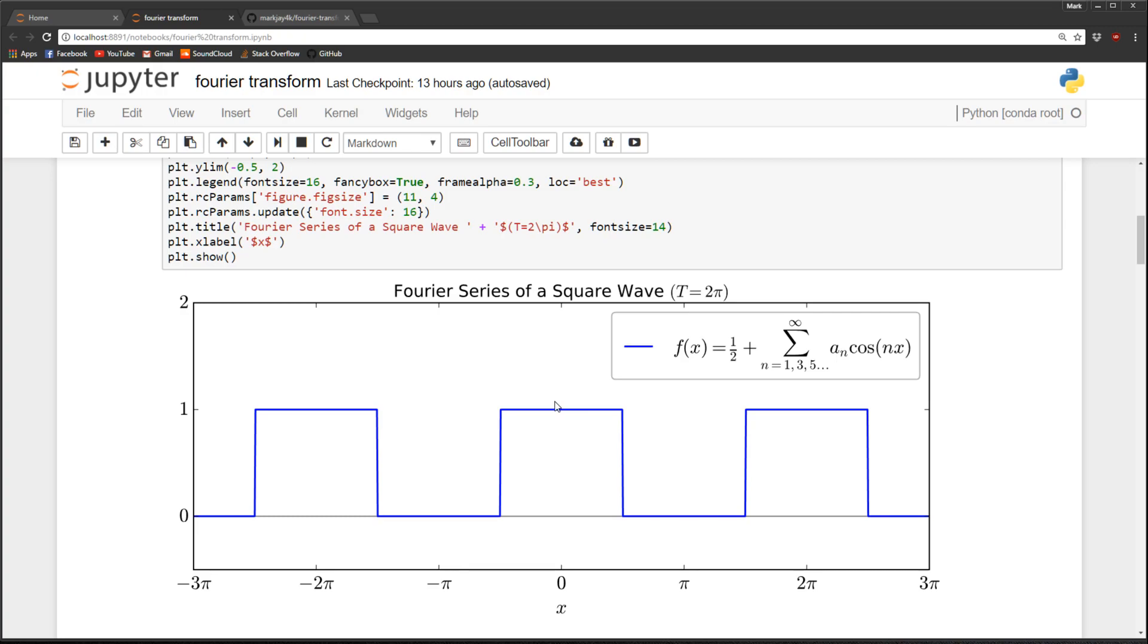And in the last video I never really explained how to calculate the a_n and b_n coefficients. I just presented what they were and left that bit out. So what I want to do is show how we calculate those.